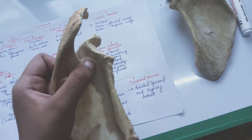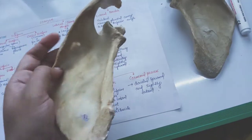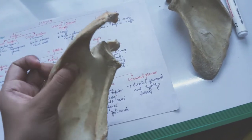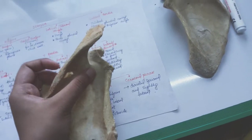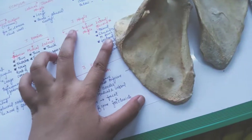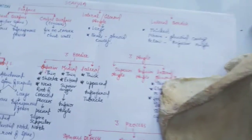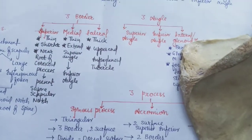The spinoglenoid notch is situated lateral to the root of the spine — it is placed lateral to the root of the spine. Then the borders: the superior border, medial border, and the lateral border. The superior border is thin.